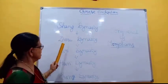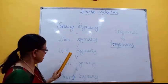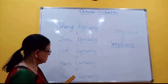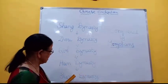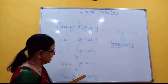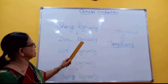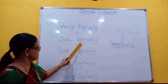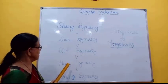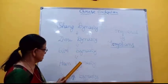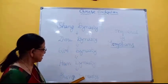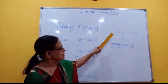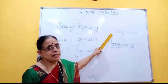The five dynasties that ruled ancient China are: Shang dynasty, Zhou dynasty, Qin dynasty, Han dynasty, and Song dynasty. Song dynasty was the last dynasty. Song dynasty came to an end when Mongolians conquered China.